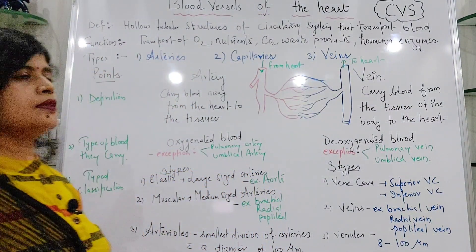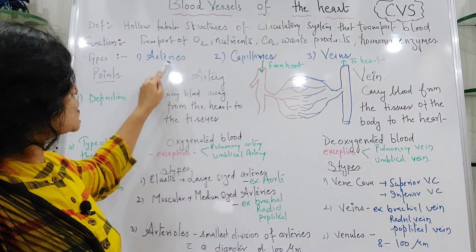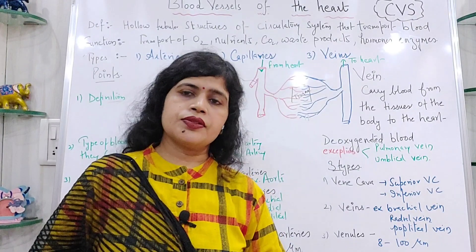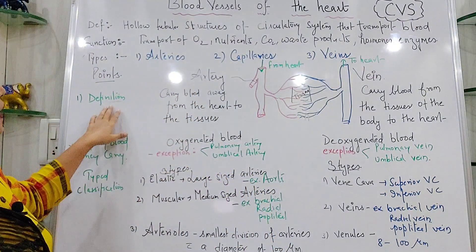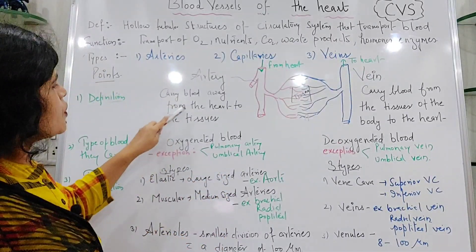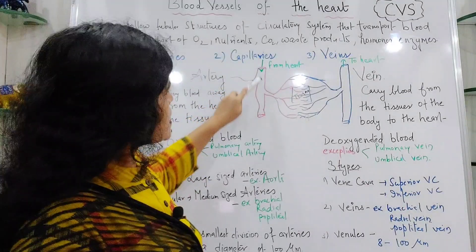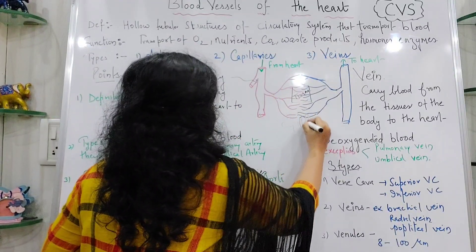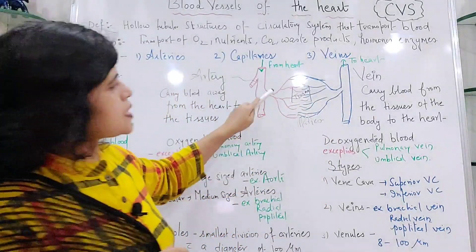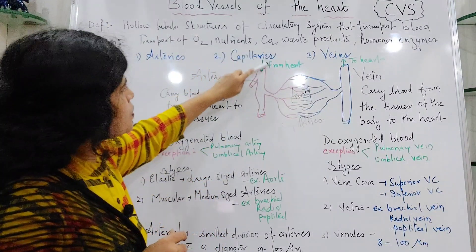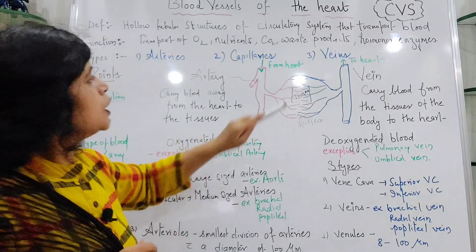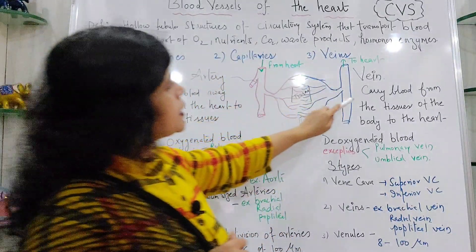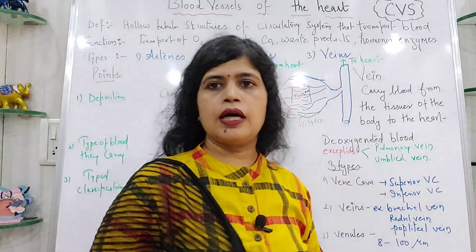There are three types of blood vessels: arteries, capillaries, and veins. An artery is a tubular structure which carries blood away from the heart to the tissues. As shown in the diagram, arteries carry blood from the heart, capillaries supply the tissues, and veins collect blood from the tissues and return it to the heart. So arteries and veins have opposite functions.